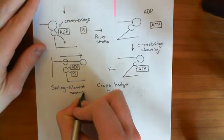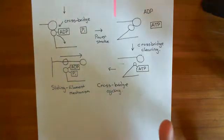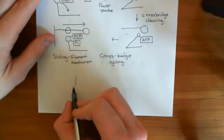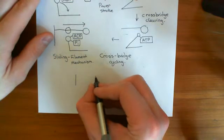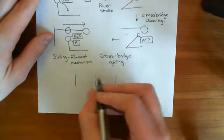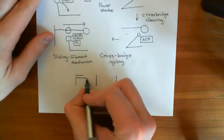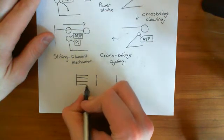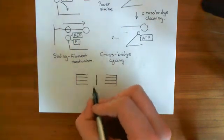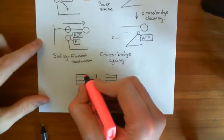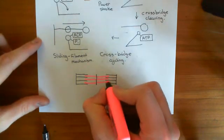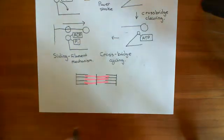Now let's take a step back and look at the result of this for the whole sarcomere. Here is our Z-disc on one side, and here's the line where the disc of protein is where the myosin is attached, and here's our other Z-disc on the other side. Here are the actin filaments coming out from each Z-disc, and from the disc in the middle, you've got the myosin filaments coming out. This cross-bridge cycling process will happen on both sides.